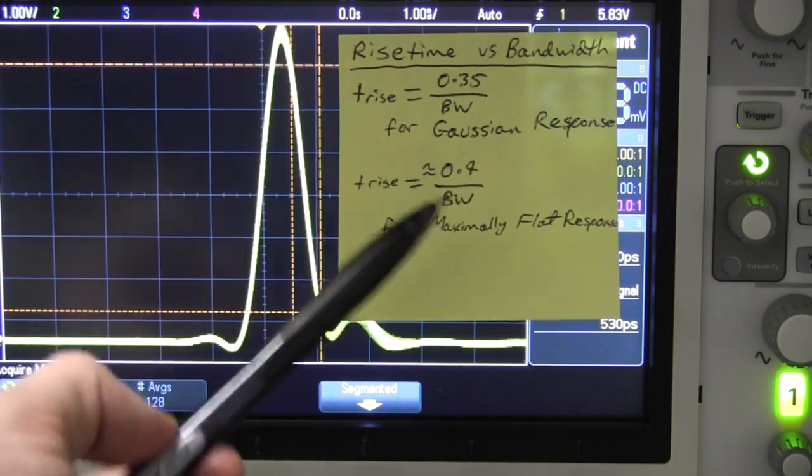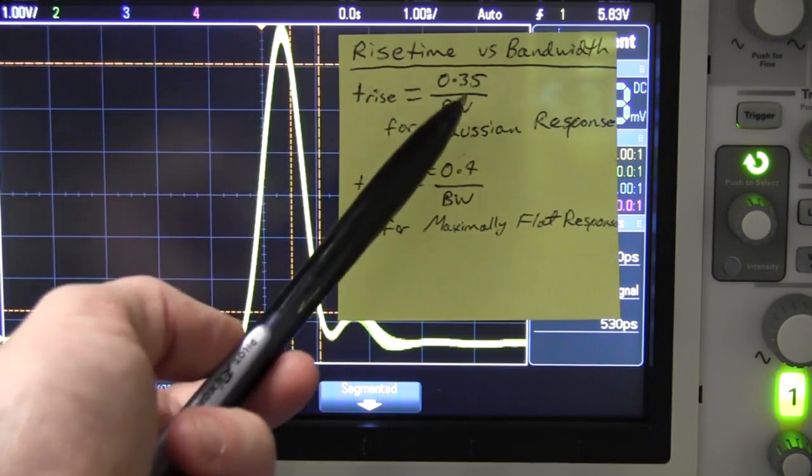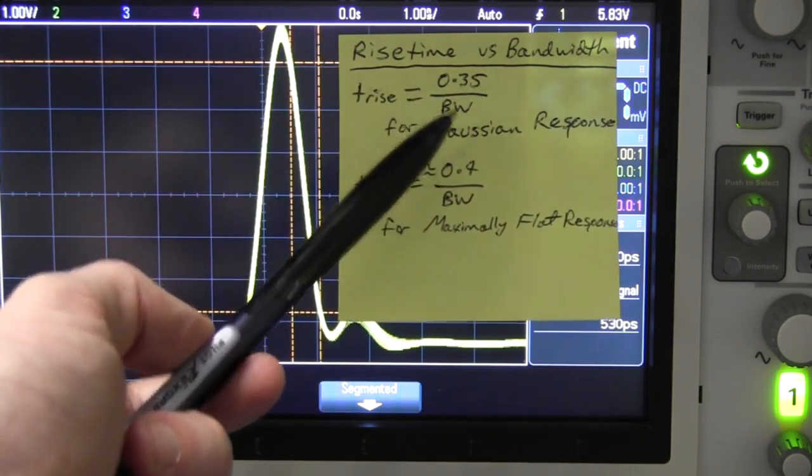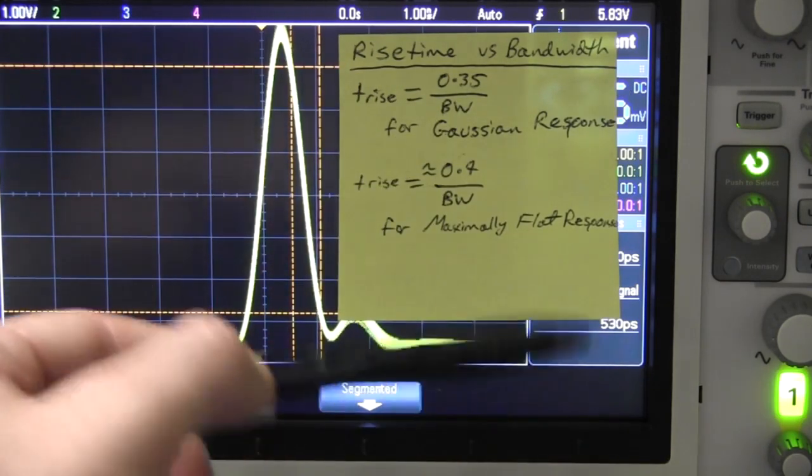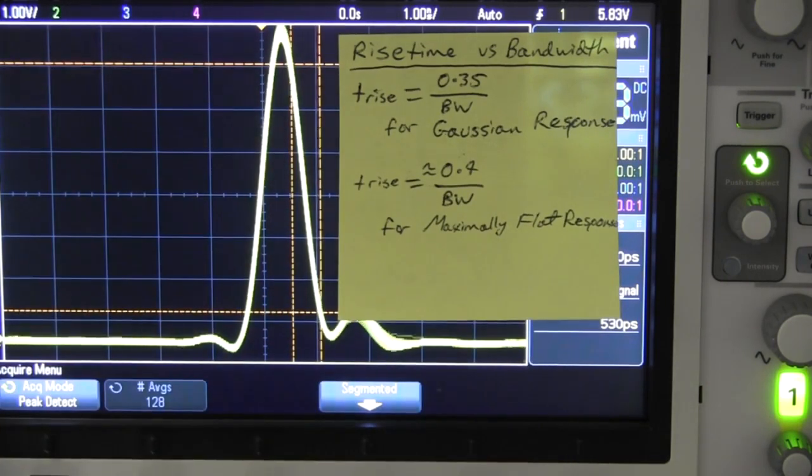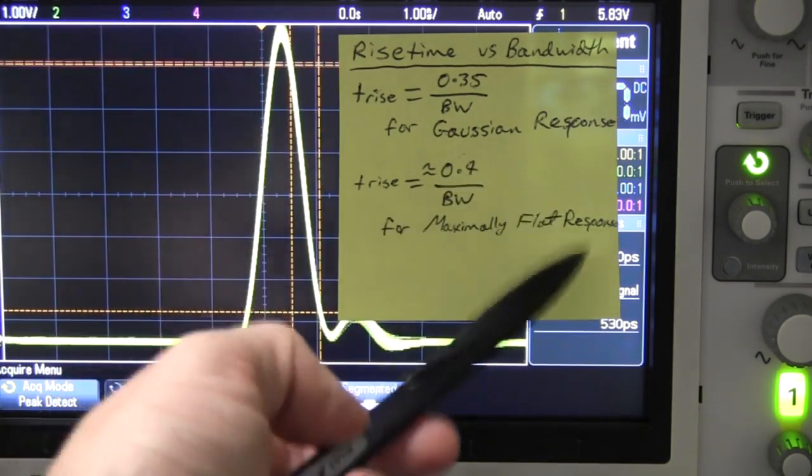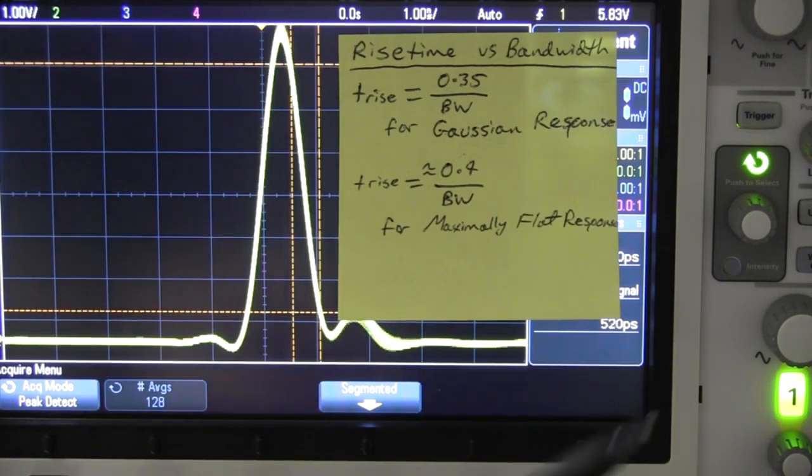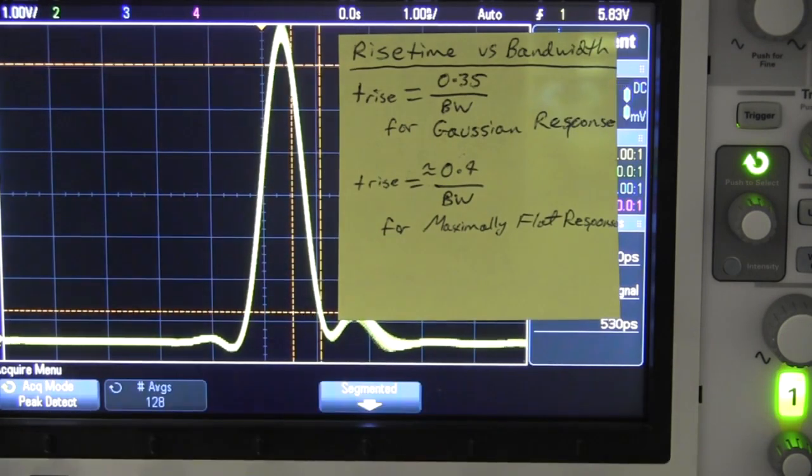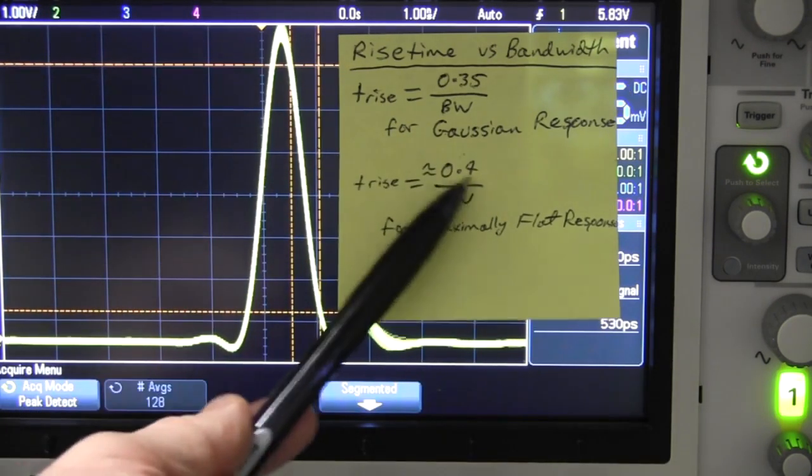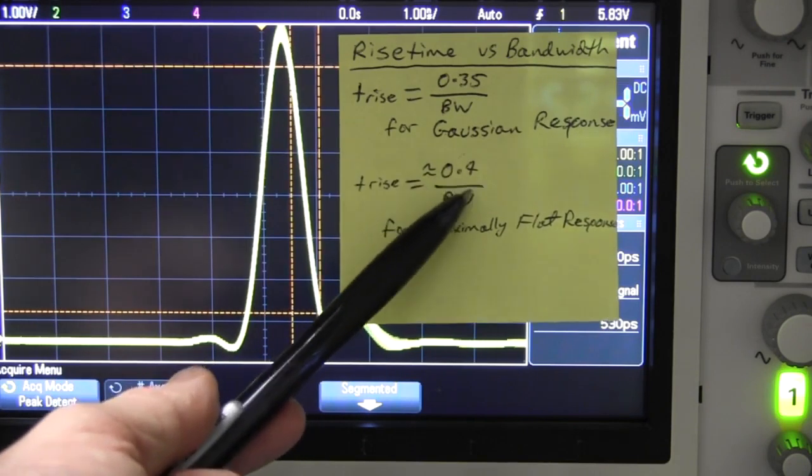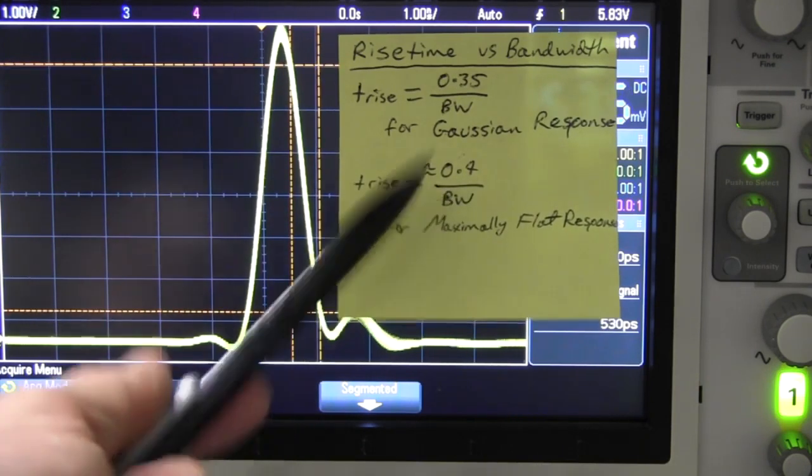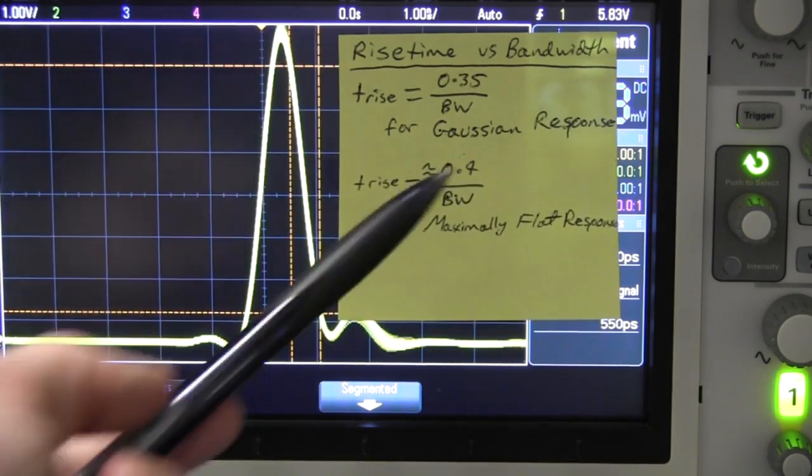But these more modern digital scopes don't necessarily have a Gaussian response on their analog input channels. They'll have what's called a maximally flat response, but even that will depend on what kind of roll-off they're using on the filtering of the analog front end. Basically it's a little bit higher, roughly around 0.4 divided by the bandwidth.